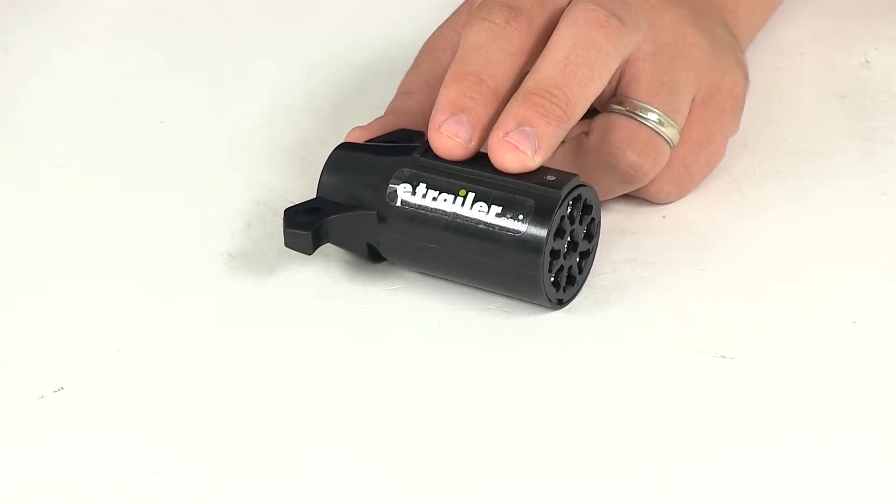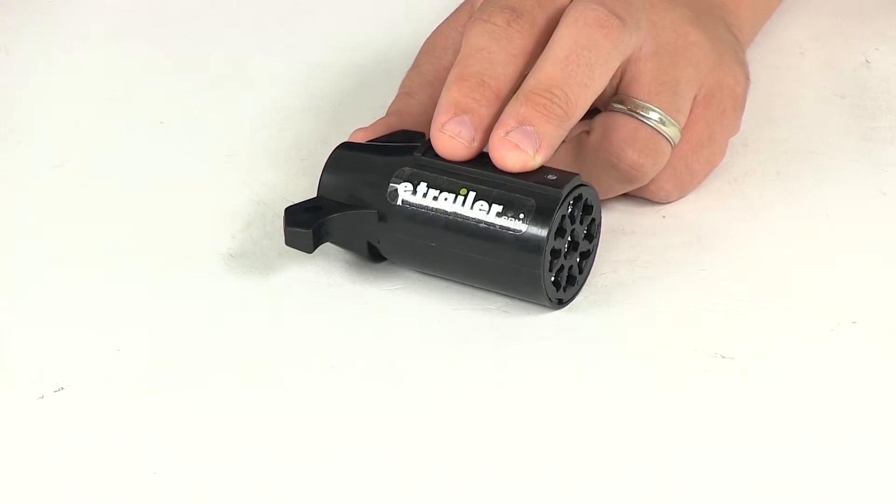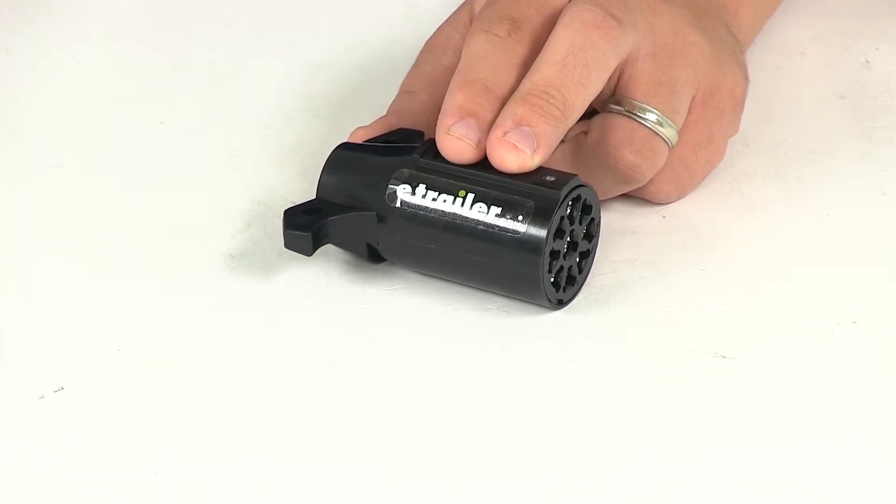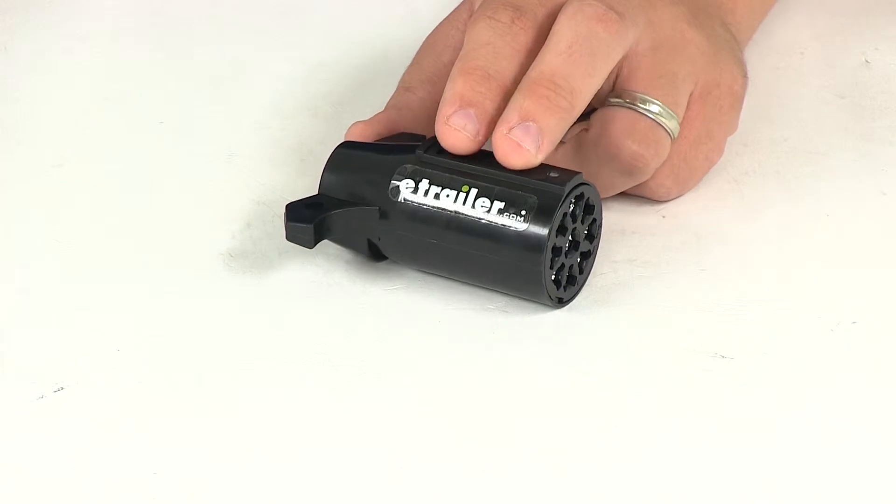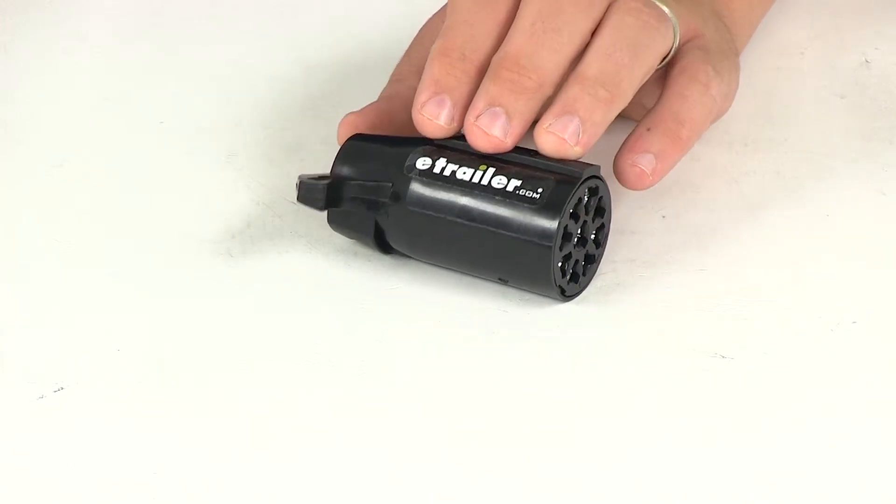Yellow is backup, auxiliary, or circuit, 14-gauge. Gray is auxiliary circuit, 12-gauge. Orange is reefer tag or stop, 14-gauge.